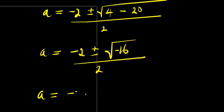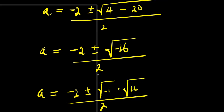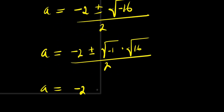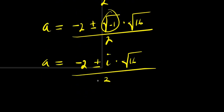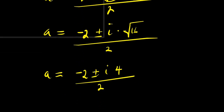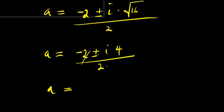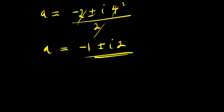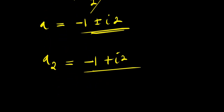From here, a equals negative 2 plus or minus square root of negative 1 times square root of 16, divided by 2. Since square root of negative 1 is i and square root of 16 is 4, we get a equals negative 2 plus or minus 4i, divided by 2. Simplifying by dividing by 2, we have a equals negative 1 plus or minus 2i. So we have two complex solutions: a₂ equals negative 1 plus 2i, and a₃ equals negative 1 minus 2i.